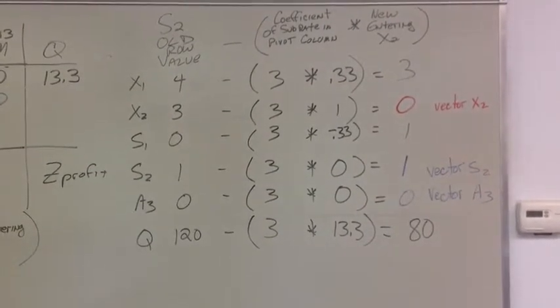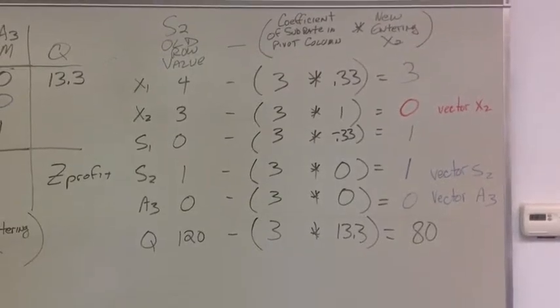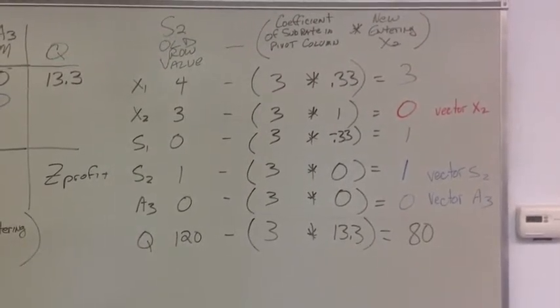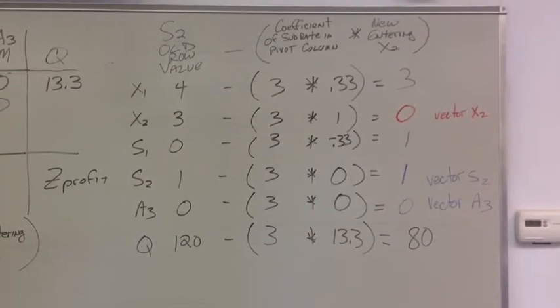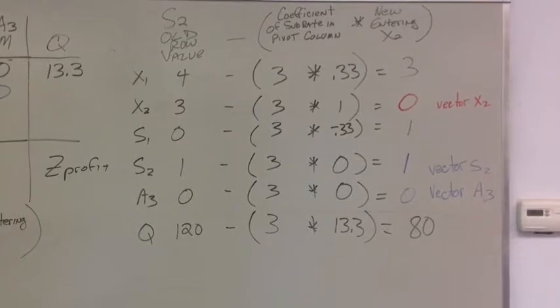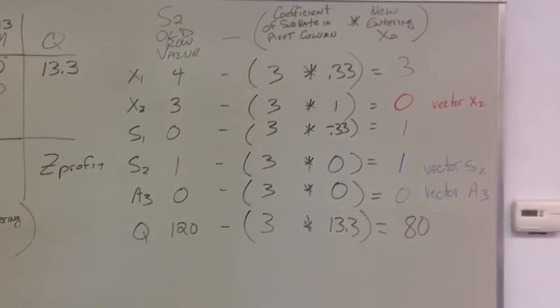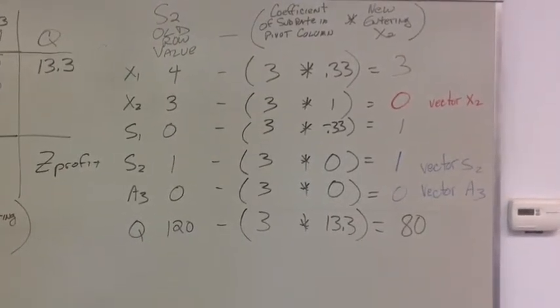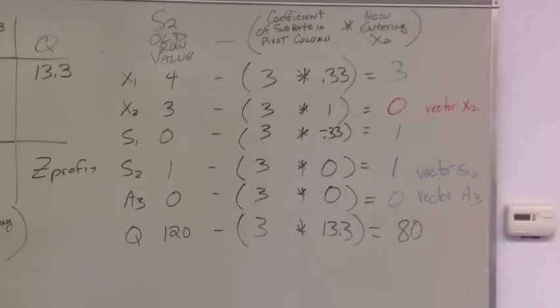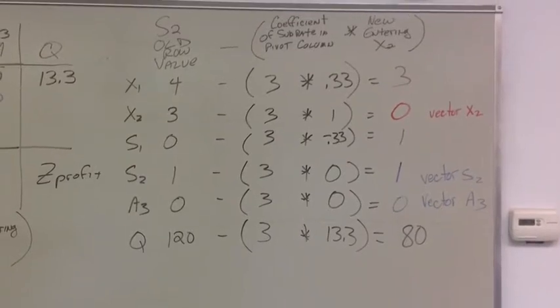You notice I put in red. Just as a good double check, that comes out to 0. We know for s2 has to be 0 in the x2 vector column. We know s2 has to be 1 in the vector column for s2. And we know a3 has to be 0 in the vector column for a3. So now we can go in and fill out our improved solution.